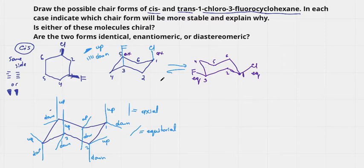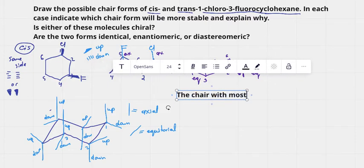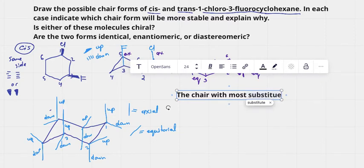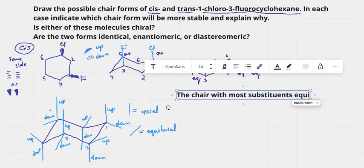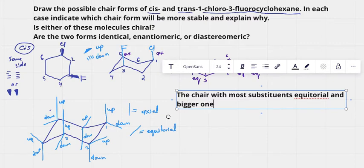If you choose between two chairs, it is very important to know that the chair that has as many substituents in equatorial positions as possible is more stable. The chair with most substituents equatorial and bigger ones equatorial is more stable for the most part.